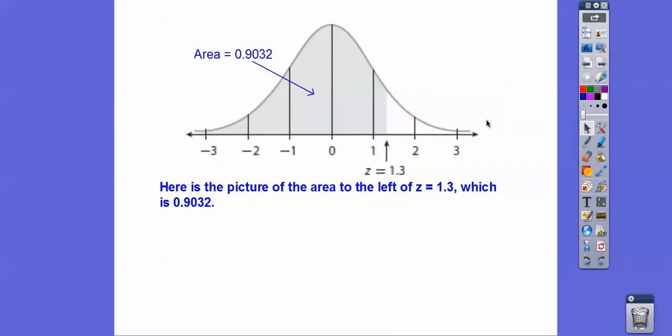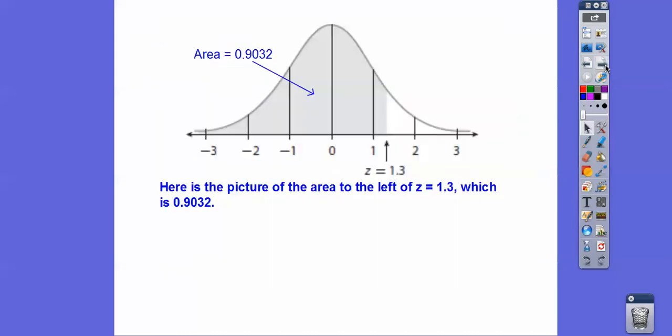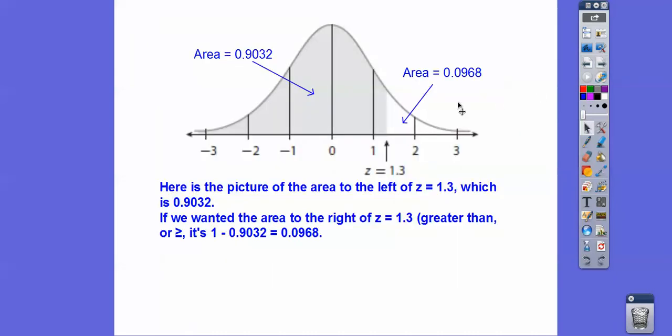All right, so here's the curve. So the picture, the area to the left. And I'm going to be asking you and requiring you to draw the curve for every z-score that we calculate. So here's 1.3-ish, and you just estimate right here. And the area to the left is that 0.9032. And then if we wanted to know the area to the right, we just take that away from 1. So the area to the right is 0.0968.